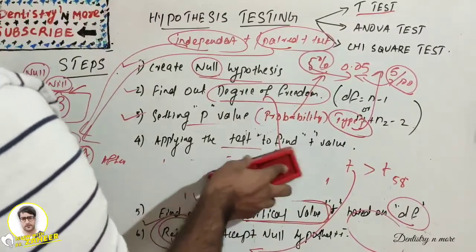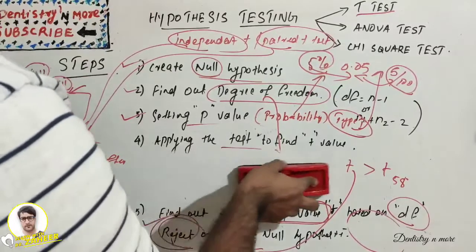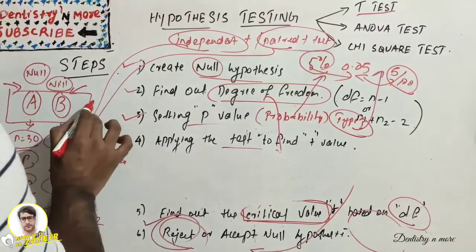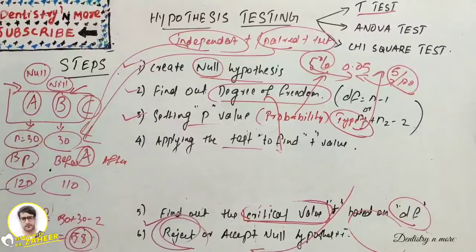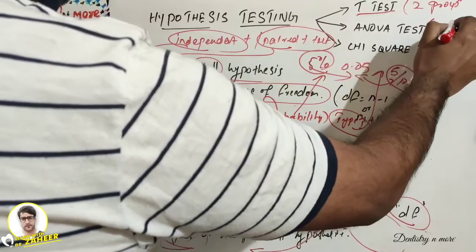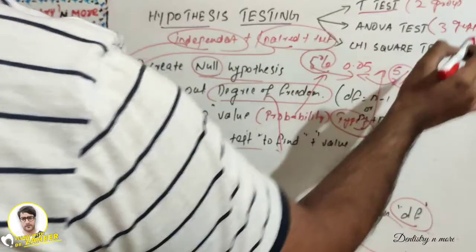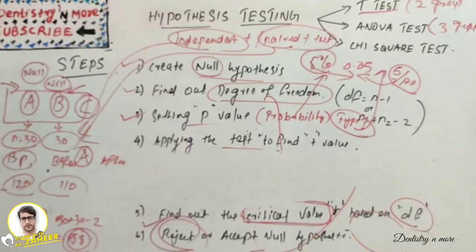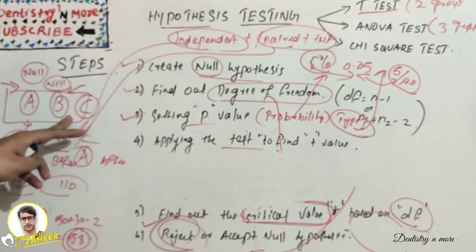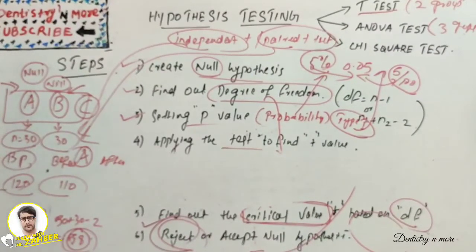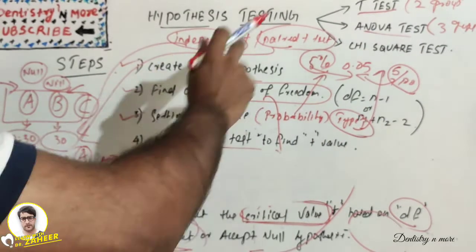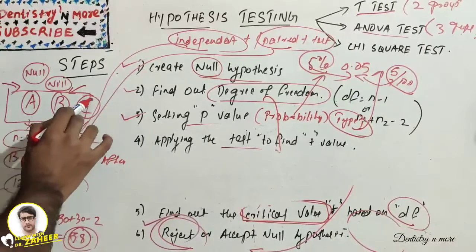In ANOVA, the formula is different but the steps are the same. The key difference is that ANOVA is used when we have more than two groups — three or more. The t-test is used for two groups, while ANOVA is used for three or more groups. You can write the same six steps for ANOVA, but you need to have three or more groups. That is the main difference between t-test and ANOVA.